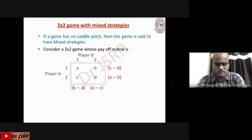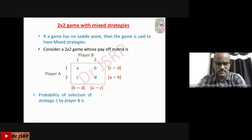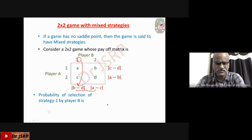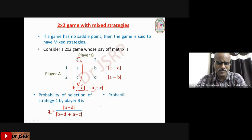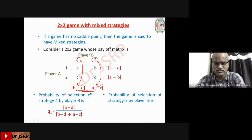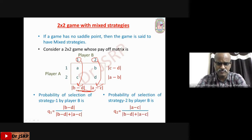Similarly, write the probabilities of selection of strategies by player B. Q1, the probability of selection of strategy 1 by player B, equals |B − D| divided by |B − D| plus |A − C|. Q2, the probability of selection of strategy 2 by player B, equals |A − C| divided by |B − D| plus |A − C|. These two values are also less than 1 and their sum is 1.